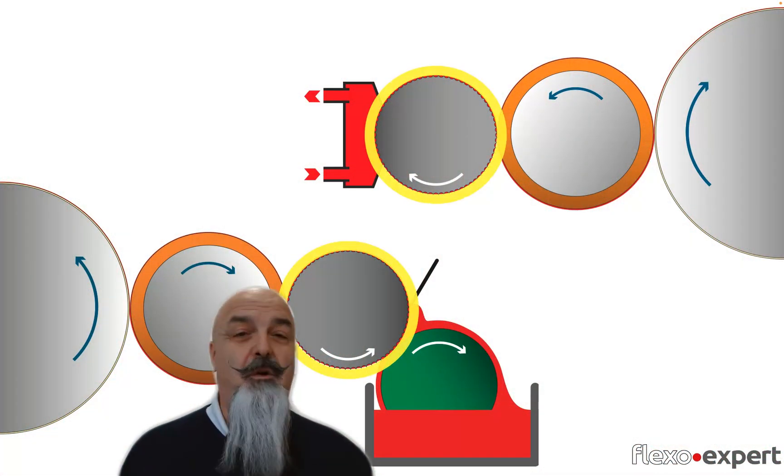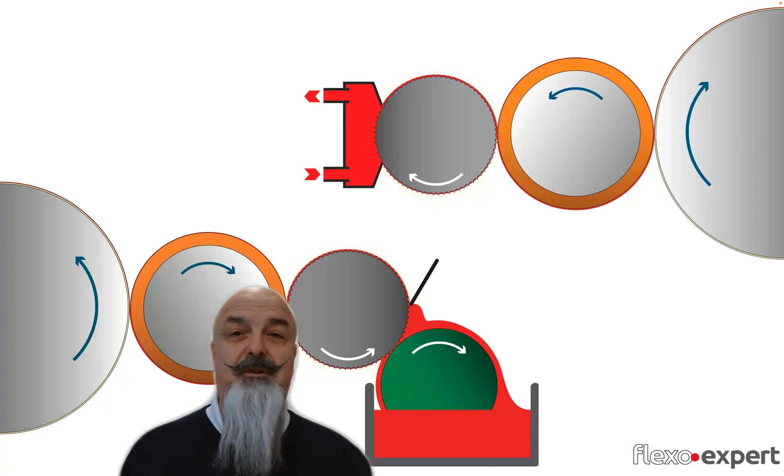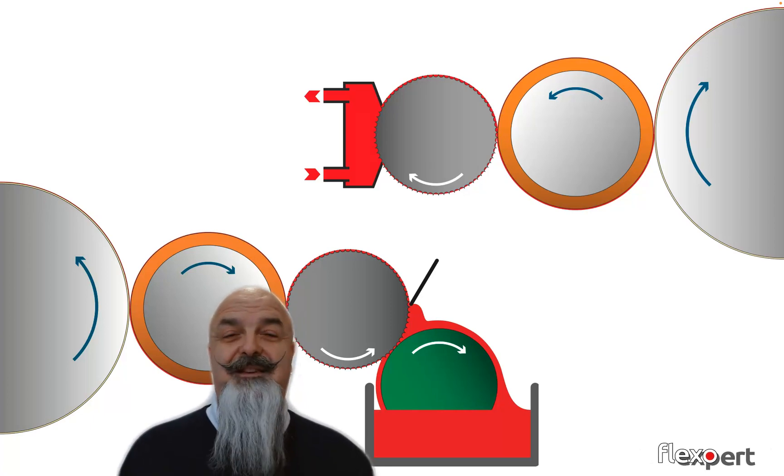Whether we use an open blade or a closed chamber system, the ink is metered, sheared and split into single droplets contained in the engraved cells of this role.